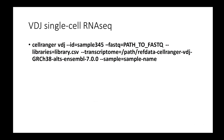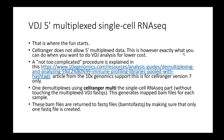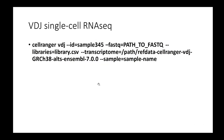For VDJ single cell RNA-seq, Cell Ranger provides a function called `cellranger vdj`. You need to specify the ID, the path to the FASTQ files, a CSV file, and the transcriptome — but here the transcriptome would be the VDJ-specific reference. Then you specify where the FASTQ files are.